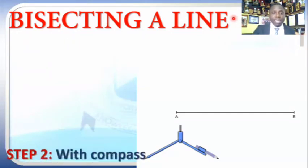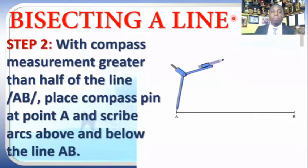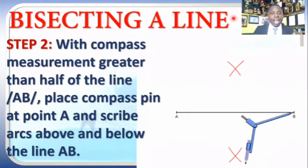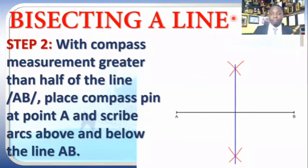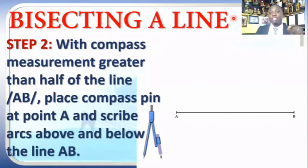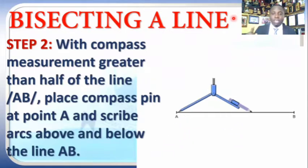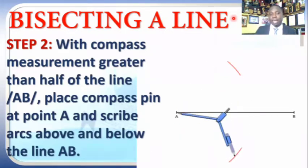After marking out our points, step two: with a compass radius greater than half of the line AB, place your compass pin at point A and scribe an arc above and below the line AB. You can see that right on the screen. We increase our compass radius to be greater than half so that eventually both arcs can touch and intersect at a point. I scribe an arc above and below — those are my construction lines.